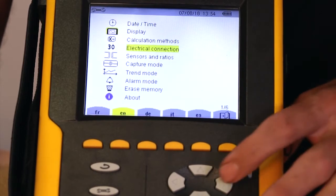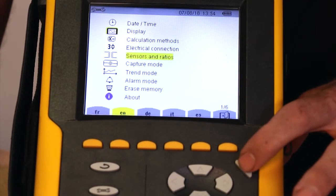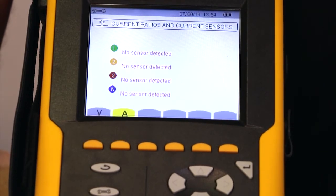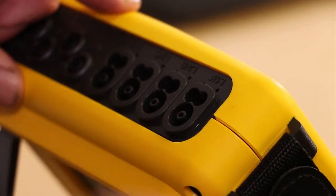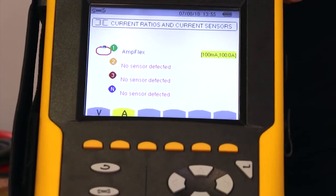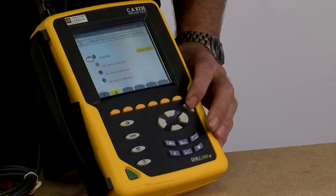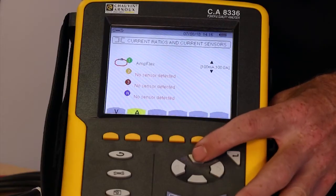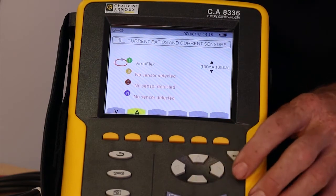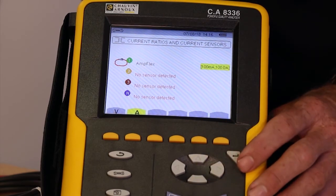Next go to sensors and ratios and press enter. At the moment, no sensors are plugged into the product. As soon as I plug one in, you'll see the Qualistar has detected an AmpFlex Rogowski coil has been connected. While the Qualistar automatically detects what sort of clamp is connected or plugged into it, with some of the clamps, you'll also have the option to change the measurement range.